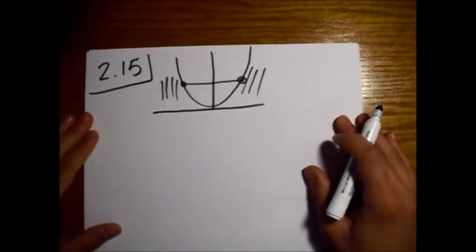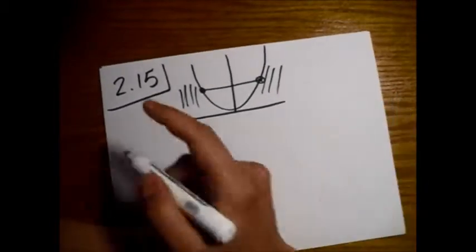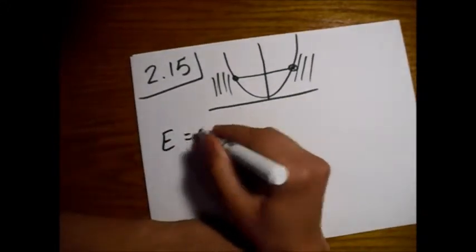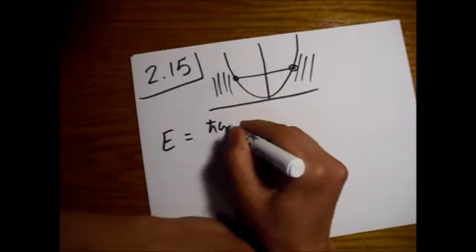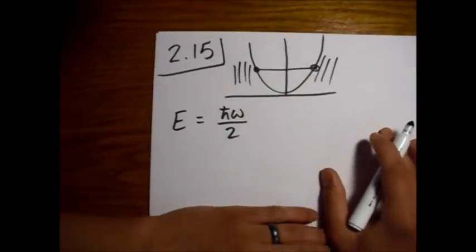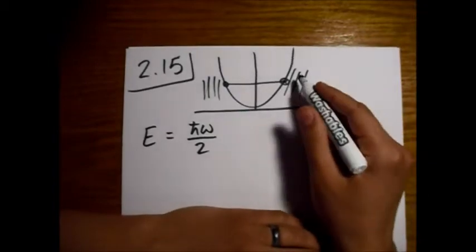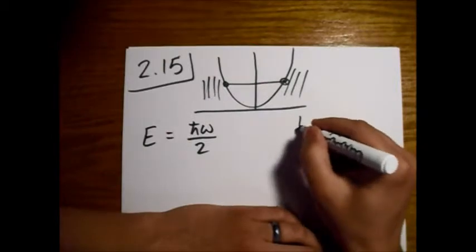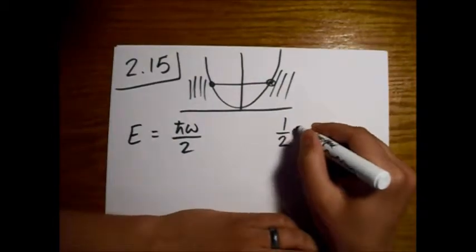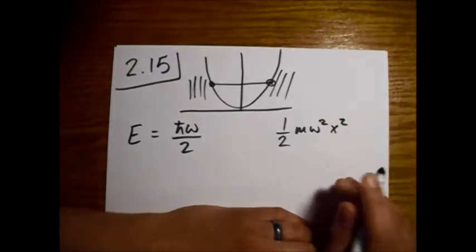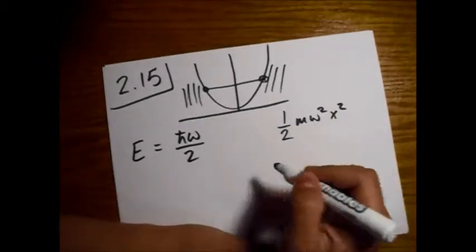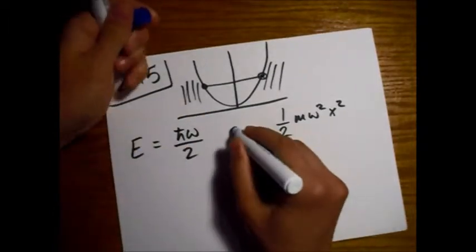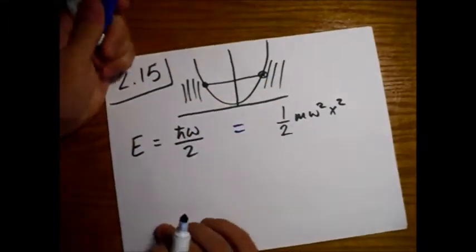Since we're looking at the ground state of the harmonic oscillator, the energy it has is ℏω/2. The potential for the harmonic oscillator is ½mω²x². When these two are equal, we have our turning points.